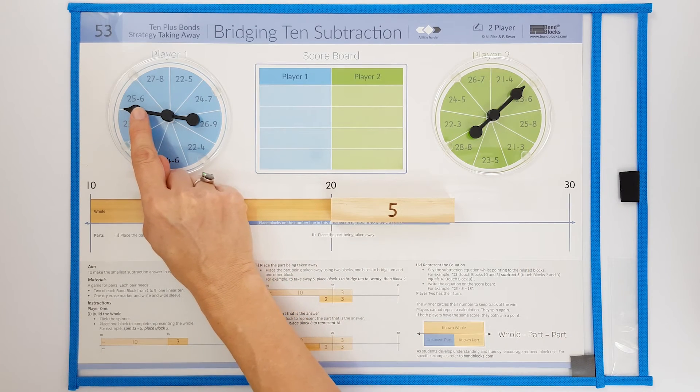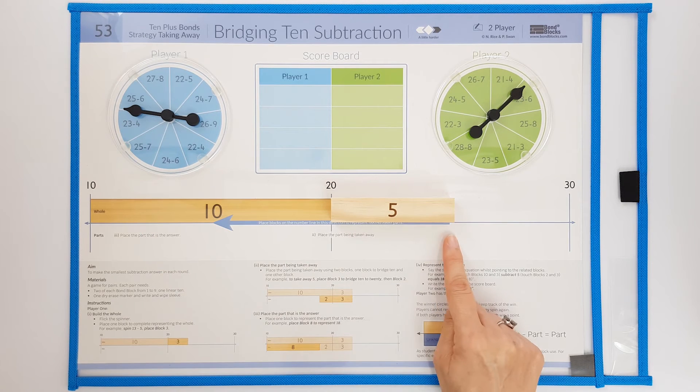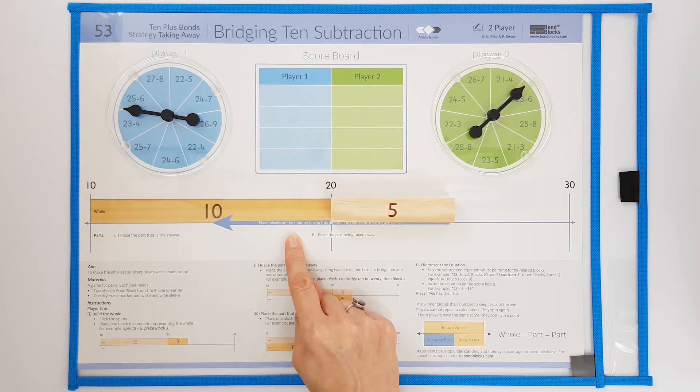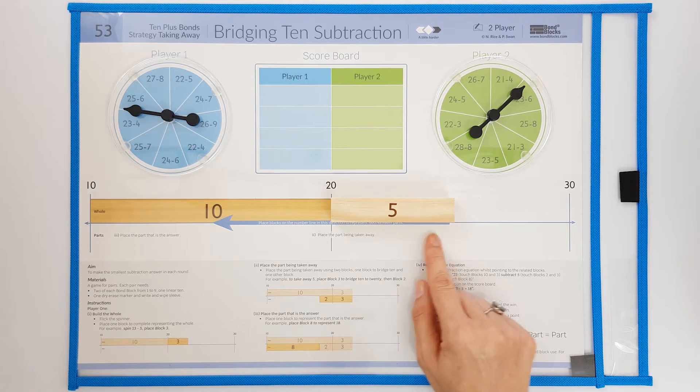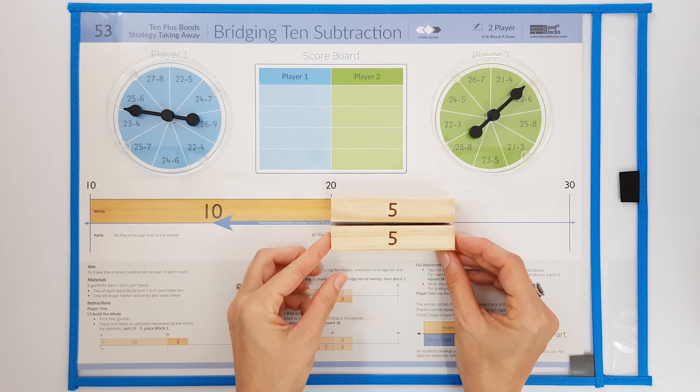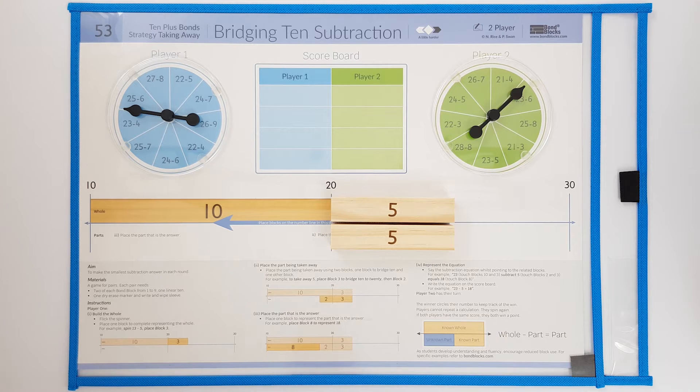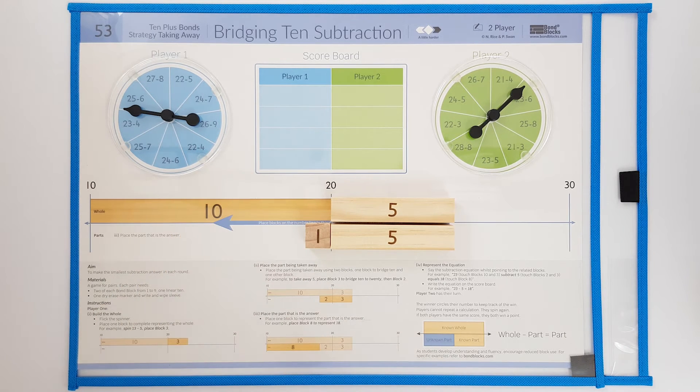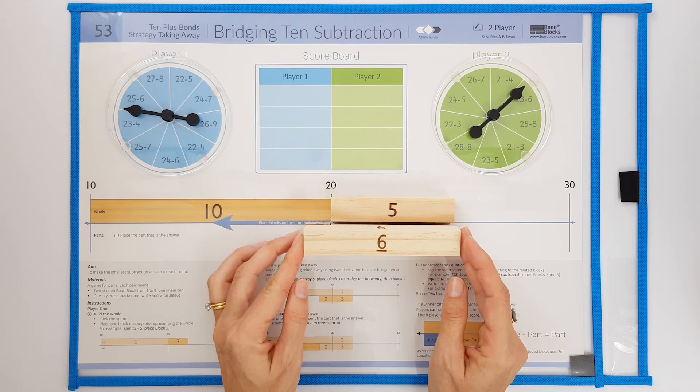Then they place the part being taken away of 6. I take away the part of 6 in 2 blocks. First I take away 5 to bridge 10 to 20, and then I take away 1 more to complete taking away 6.